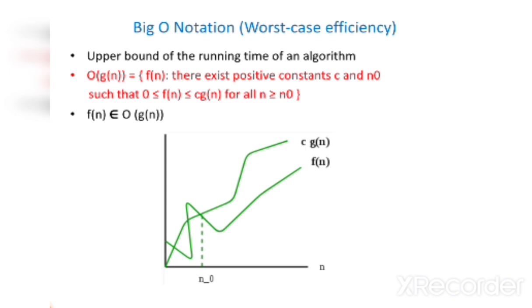For f(n) belonging to O(g(n)), the upper line represents c·g(n) and the lower line represents f(n). The point where they join is called n₀.